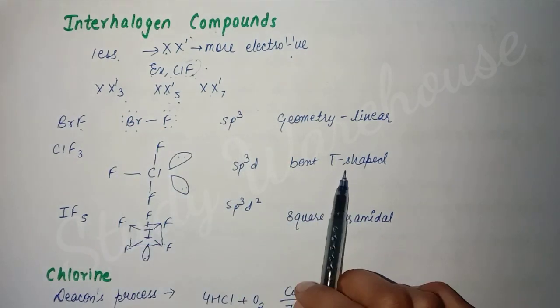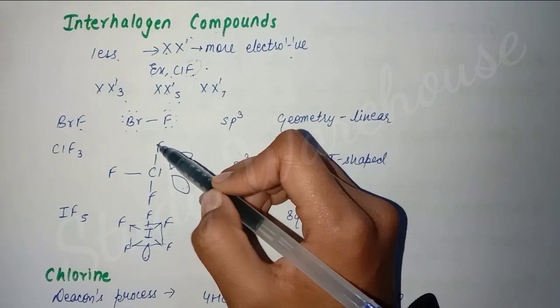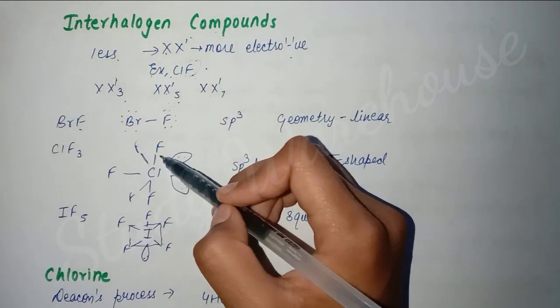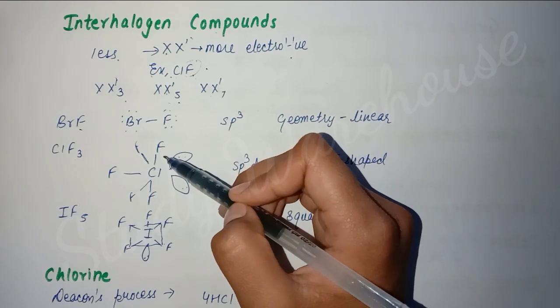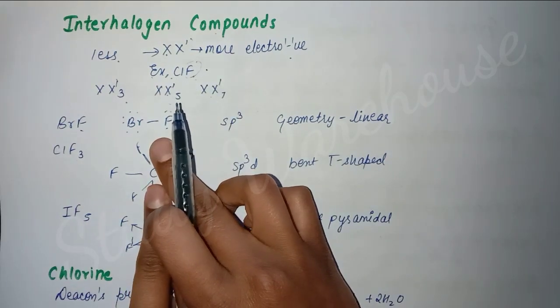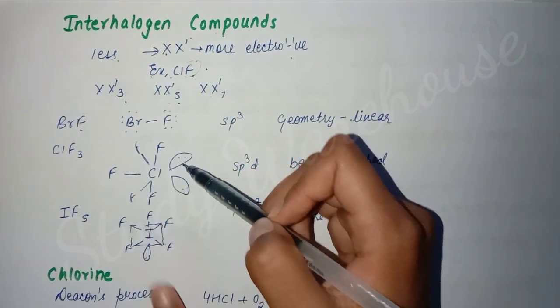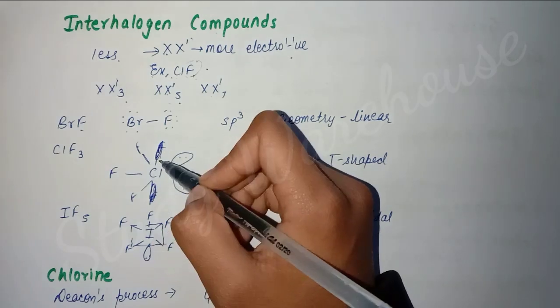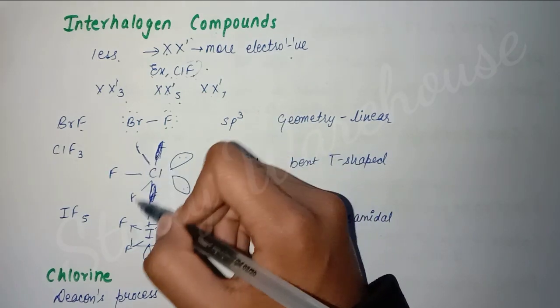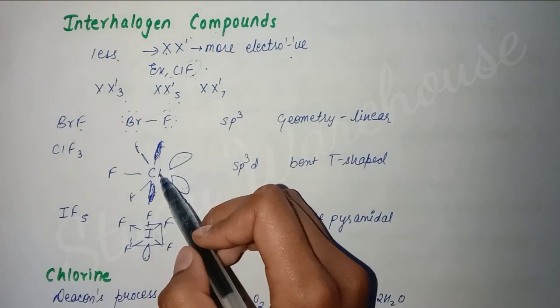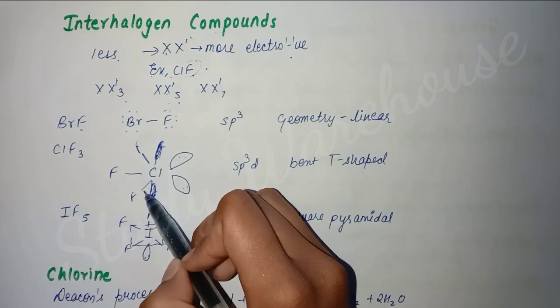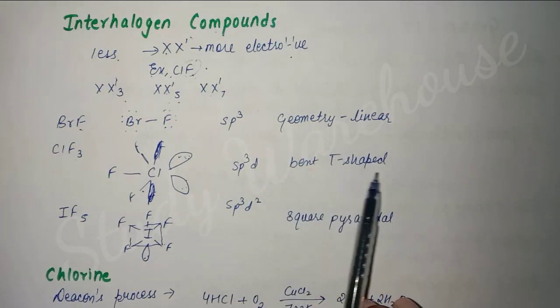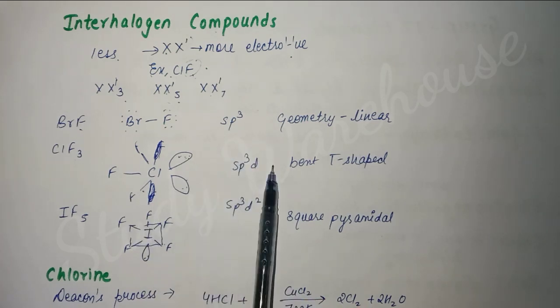If we look at ClF3, it has a bent T-shape - it's not completely straight but slightly bent like this. When we draw it, we call it bent T-shape. I've drawn it this way first so you don't get confused if you forget later. But its actual structure is: fluorine atoms like this and here there are two lone pairs of electrons. You can see from the bonding - we remove this, or if you want to learn it this way, you can draw it like this too. The examiner won't cut marks, but if you want to draw it accurately, it's like this. Chlorine has 7 electrons, it bonded 3 with fluorine, so 4 remain - that's 2 pairs of electrons, 4 electrons means 2 pairs. So here the geometry is bent T-shape and hybridization is sp3d.